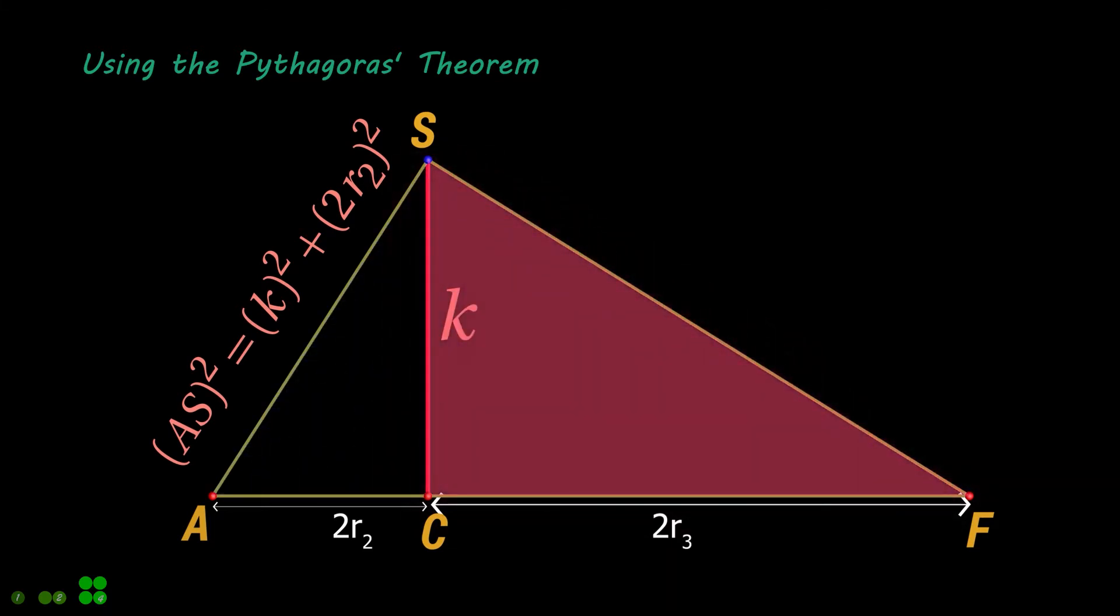Similarly, following the Pythagorean theorem for this pink right-angled triangle, we can write this equation for the side FS.